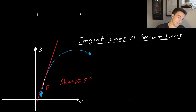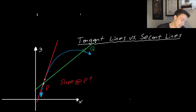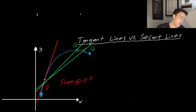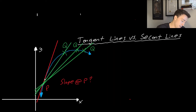First, I want to explain what a secant line is. If we have some point called Q, the secant line represents the line going through point P to point Q. If we move Q closer to P, we get another secant line through P and the new Q. We can keep doing this and get closer and closer to the tangent line. All of these lines represent secant lines.